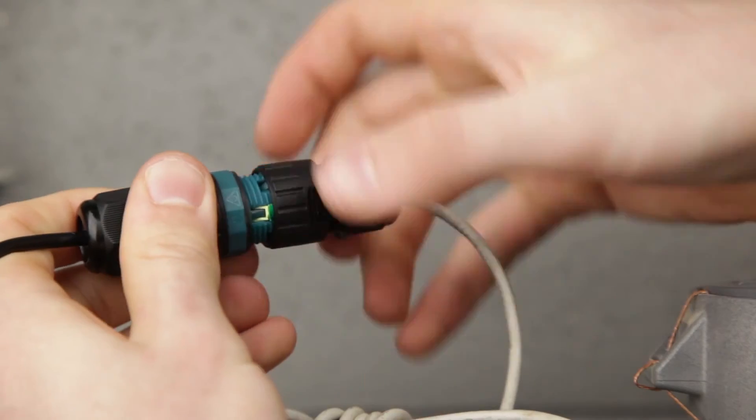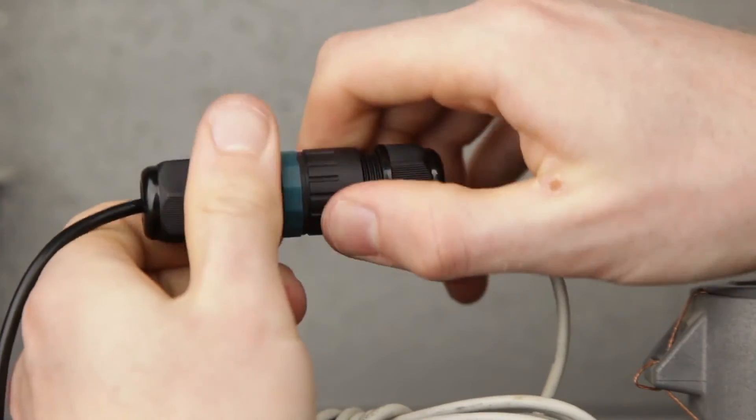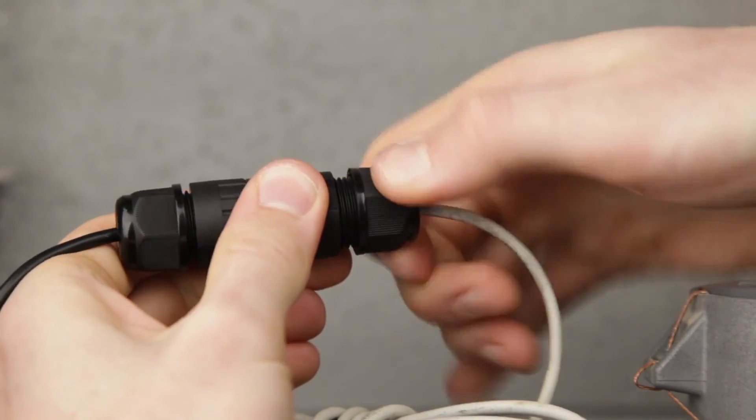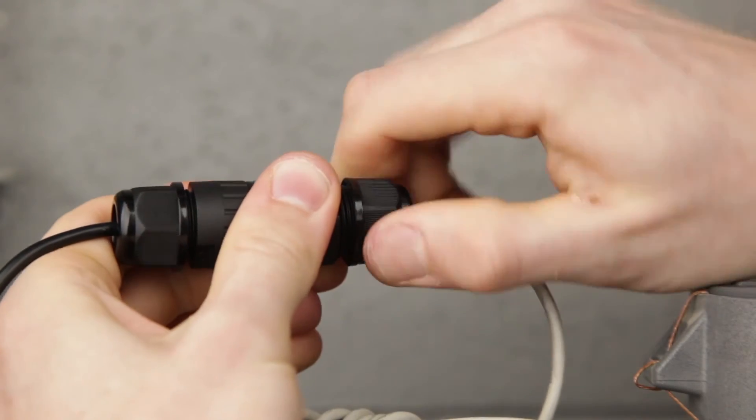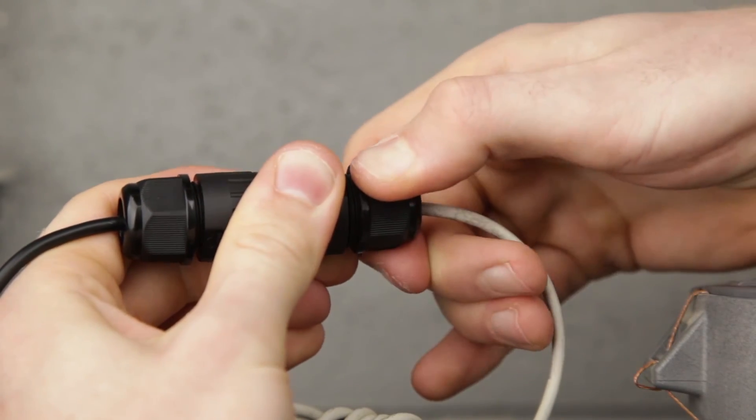Thread the connector tightly closed. And tighten the outer part as tightly as you can to create a snug waterproof seal.